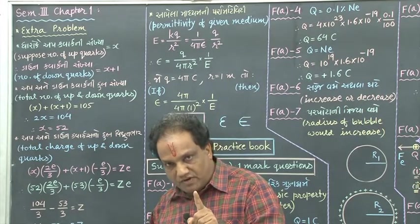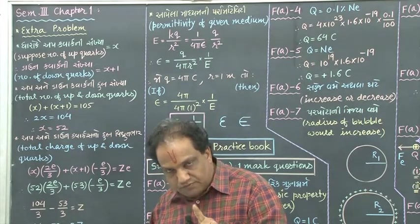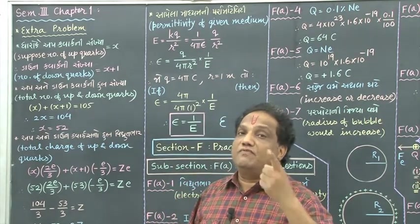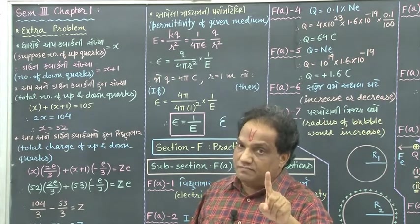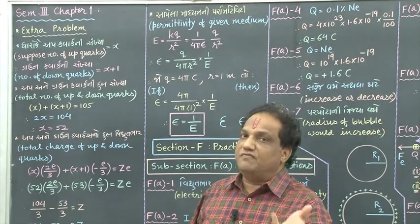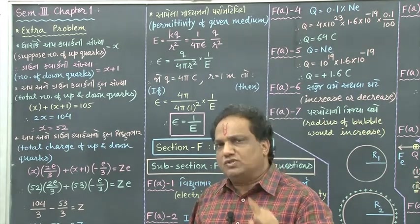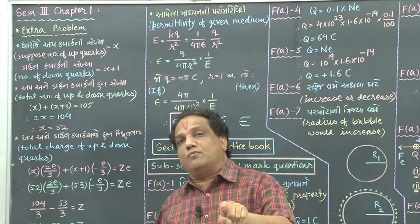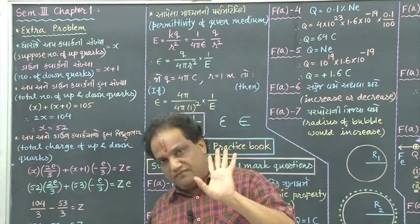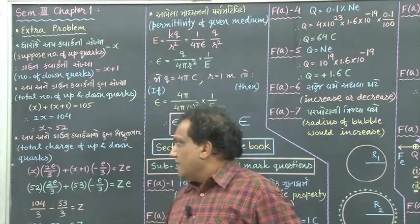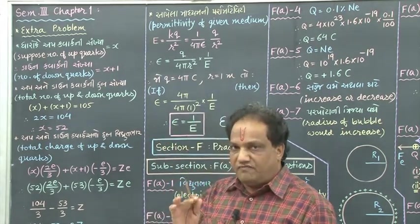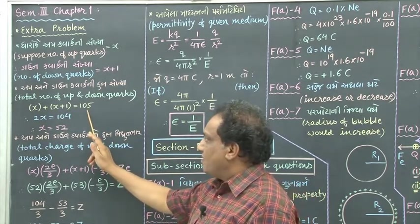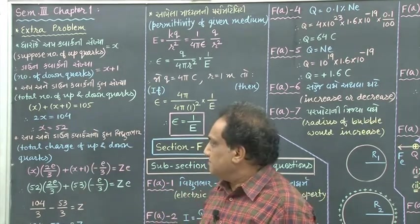If the number of up quarks is 52, then the number of down quarks will be greater than 52 by 1, that is 53, because the number of down quarks is greater than the number of up quarks by 1. And you can see 52 plus 53 — that total is 105.